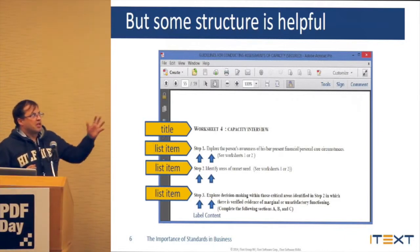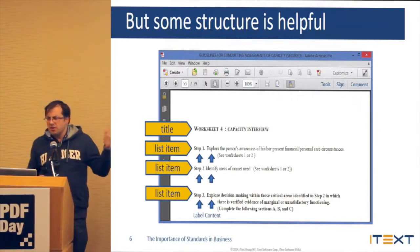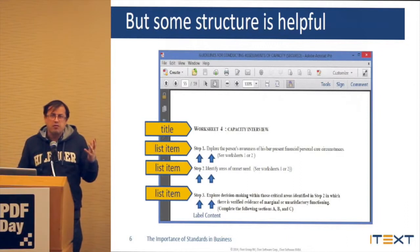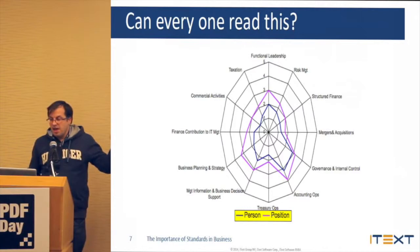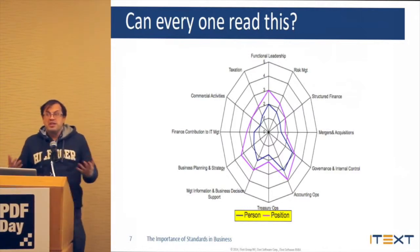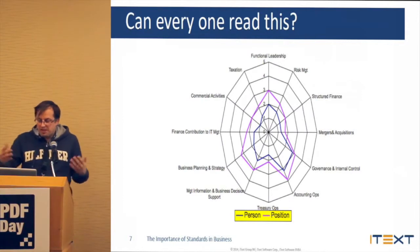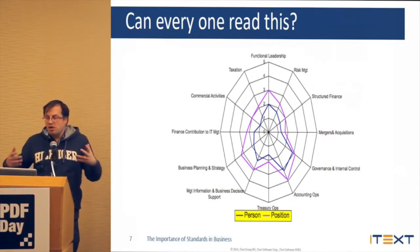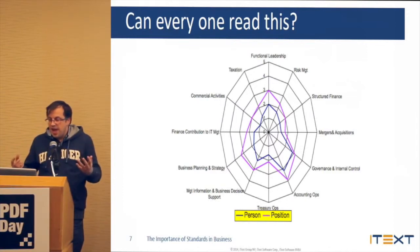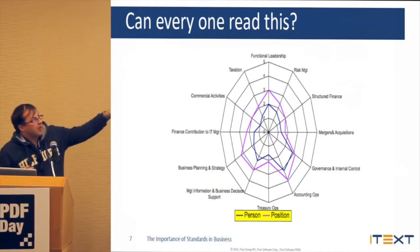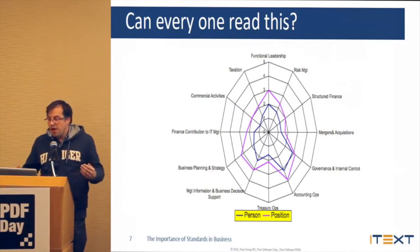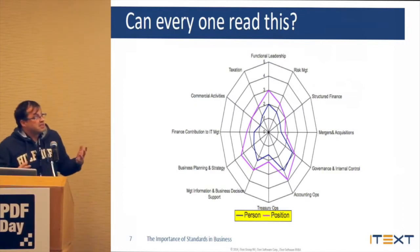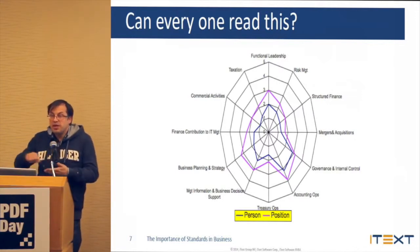Now, maybe you say, hey, but we don't need this structure. So I'm going to give you another example. This is a spider chart. Now, if I would read this out loud, for starters, I wouldn't know where to start. So this represents a number of properties and a number of qualities. And there's one line that says this is the score you should have if you want a job, and the other line says this is the score that a single person had when he did an assessment.